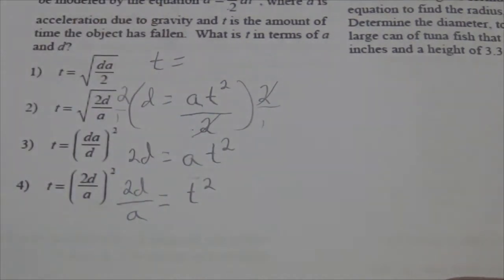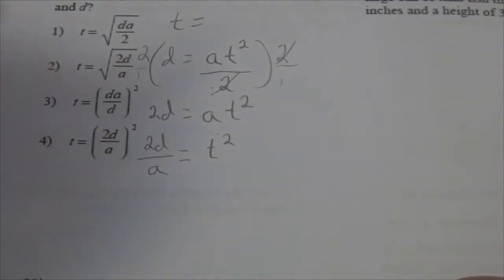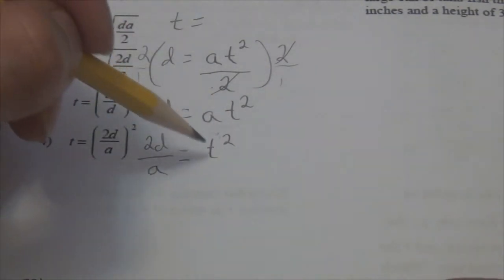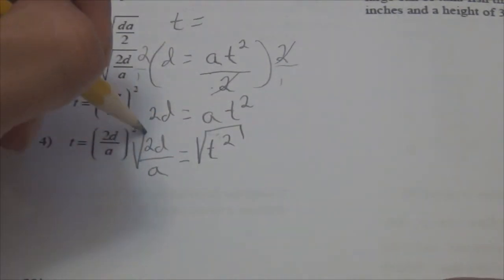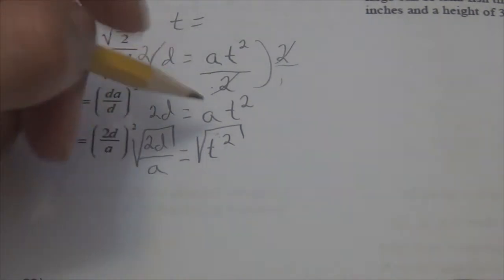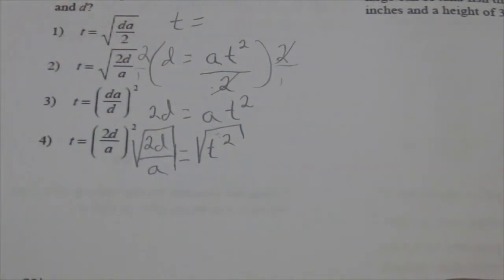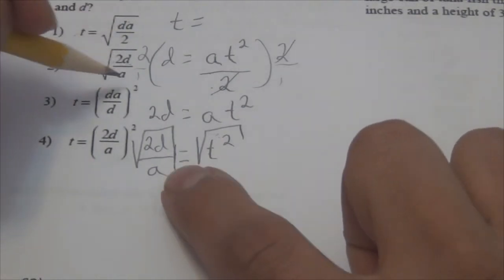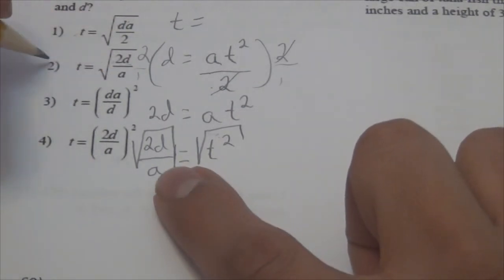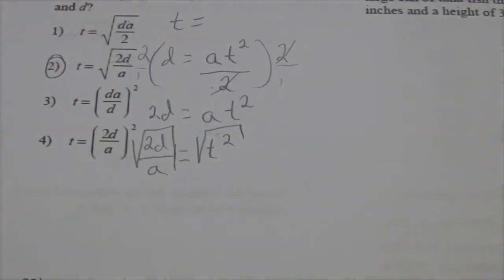How do I undo a T squared? They want T, not T squared. So take the square root. The square root goes through the whole thing. The answer is the square root of 2D over A. Choice number two is the right choice.